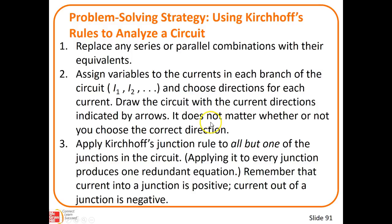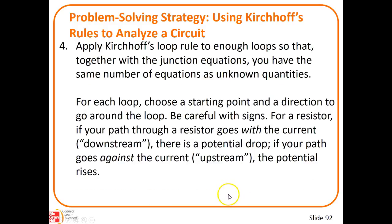There are several rules here that you can read about in your book. They want you to replace any series or parallel combinations with their equivalents, assign variables to currents, apply the junction rule to all but one of the junctions, and then apply the loop rule to enough loops so that together with the junction equations, you have the same number of equations as unknowns. Then you can solve it.